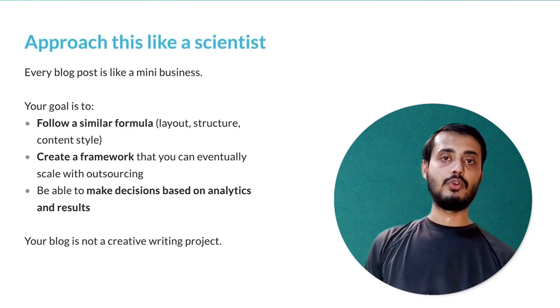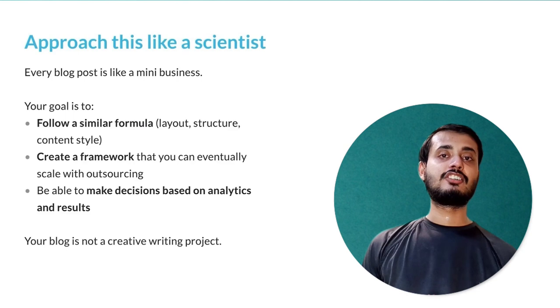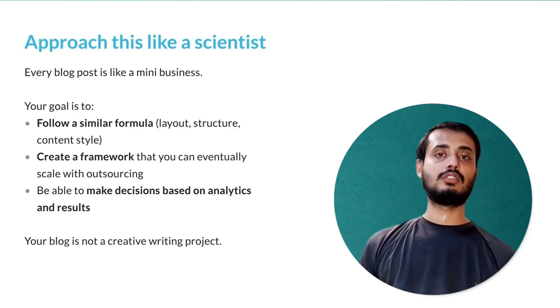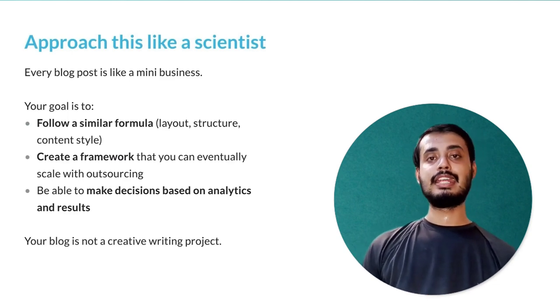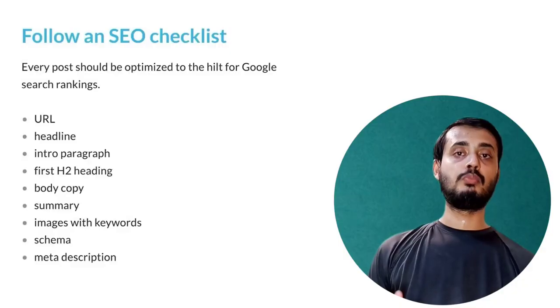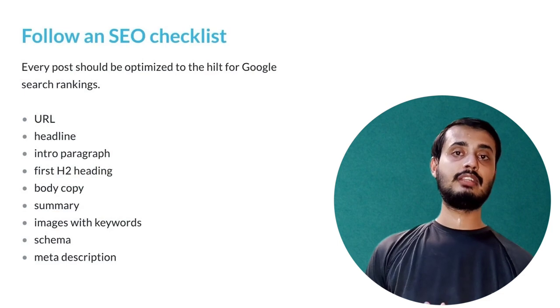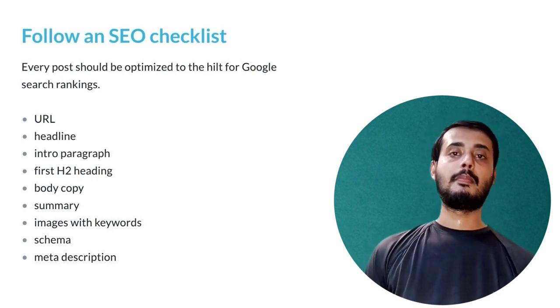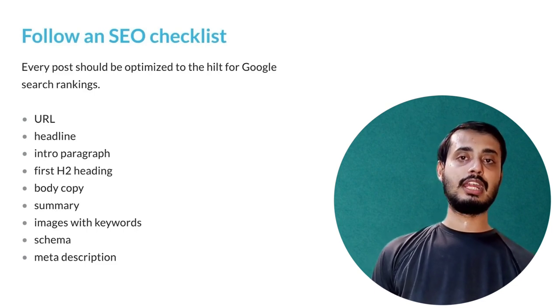We approach this like a scientist — each blog post is ideally a mini business with its own unique affiliate link, its own ranking, and its own income. The goal is to follow a similar formula, layout, structure, and content style that you create your own process around — one you can do quickly and at high quality. You create a framework you can eventually scale. Master it first before hiring writers or using AI tools, then make decisions based on analytics and real data.